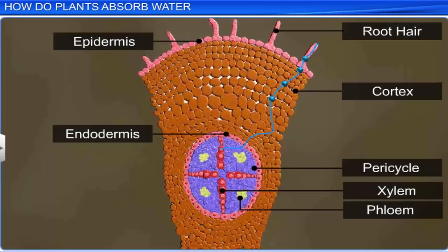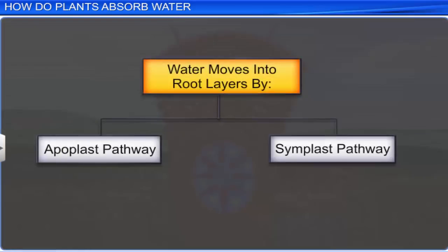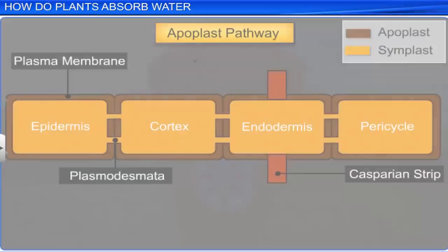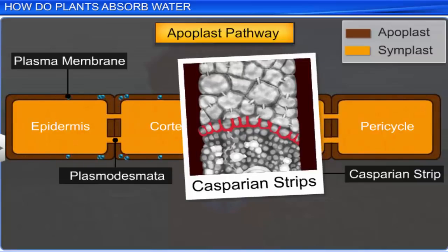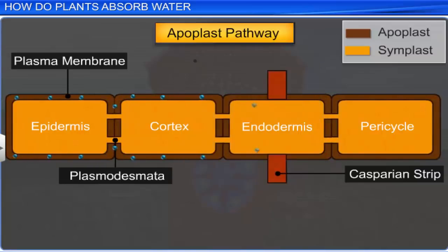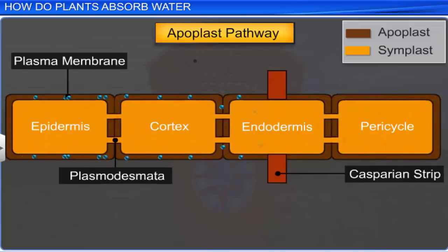After water is absorbed, it moves deeper into the root layers by one of two pathways: apoplast and symplast. Apoplast is a continuous system of adjacent cell walls in a plant, interrupted only by waxy suberized Casparian strips in the root endodermis. Apoplastic movement of water occurs through intercellular spaces and permeable cell walls. Water movement is through mass flow and is dependent on the gradient.